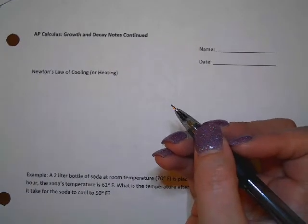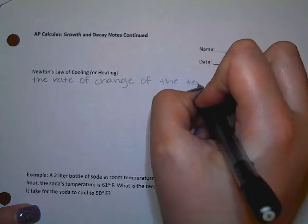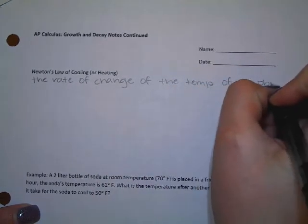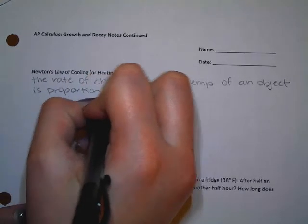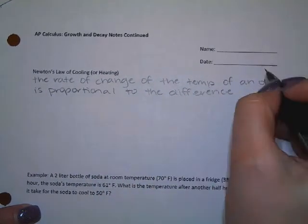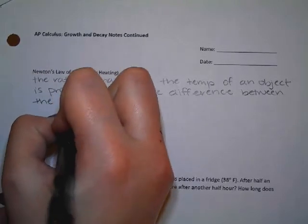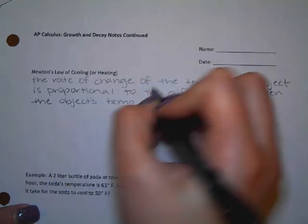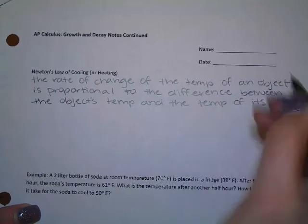All right, for Newton's law of cooling or heating, we're going to say the rate of change of the temperature of an object is proportional to the difference between the object's temperature and the temperature of its surroundings.